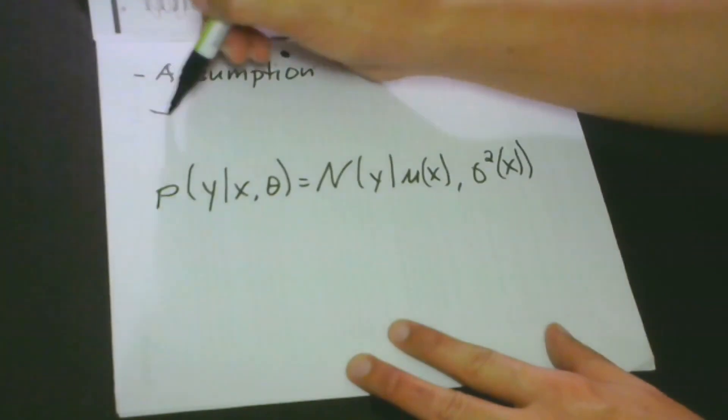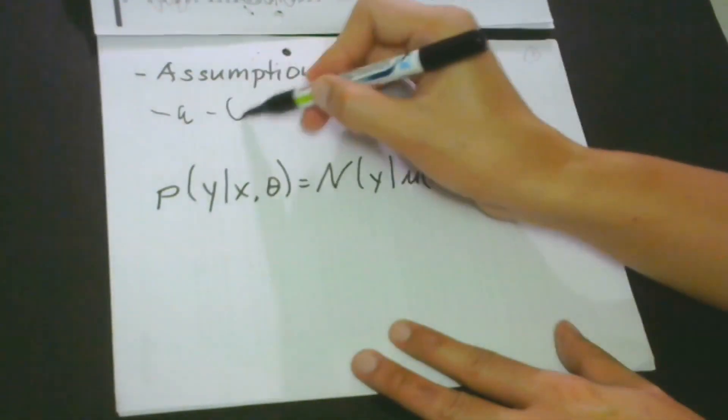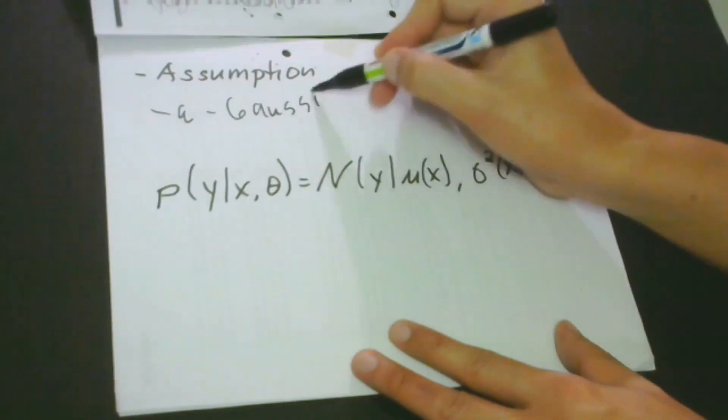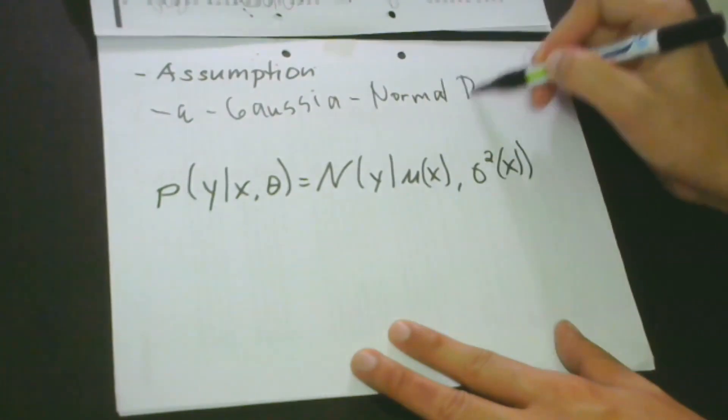The assumption is that our error is actually a Gaussian. And we say that when we say Gaussian, it has something to do with a normal distribution. Please don't forget that.